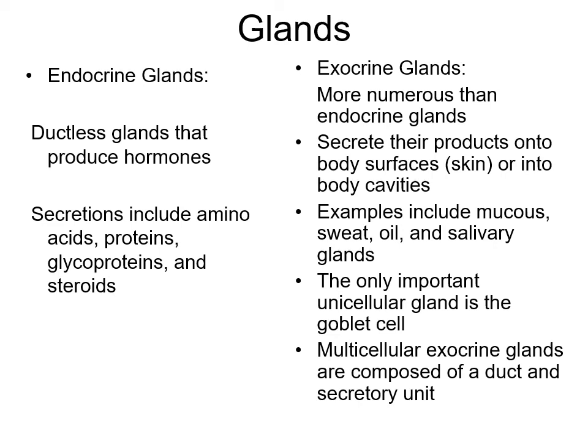Endocrine glands are ductless and produce hormones - their secretions could be amino acids, proteins, glycoproteins, and steroids. Exocrine glands are more numerous than endocrine; they secrete their products onto body surfaces through a duct. Examples include mucus, sweat, oil, and salivary glands. The only important unicellular gland is the goblet cell, found within the columnar epithelial cells. Multicellular exocrine glands are composed of a duct and a secretory unit.